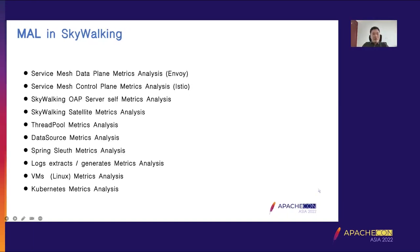MAL is widely used in SkyWalking, such as service mesh data plane analysis, Envoy control plane metrics analysis. The SkyWalking OAP server itself includes self-metrics analysis, the satellite, thread pool, data source, and stream flows. These report meter-format metrics through the SkyWalking agent. Logs-extracted generated metrics analysis is also supported. The last two — VMs and Kubernetes metrics analysis — are the content I'll share today.